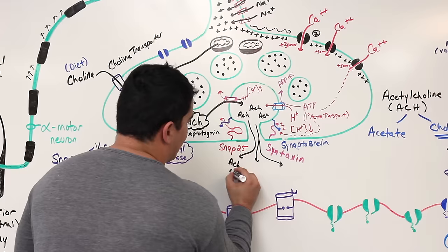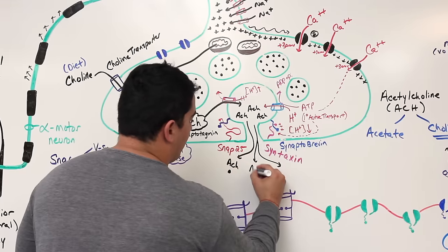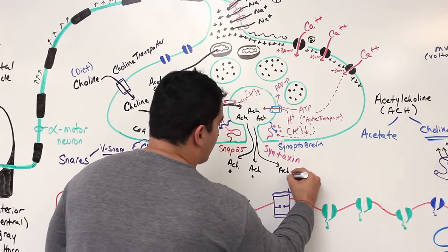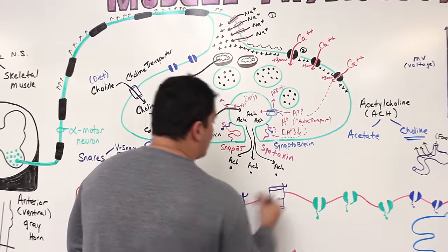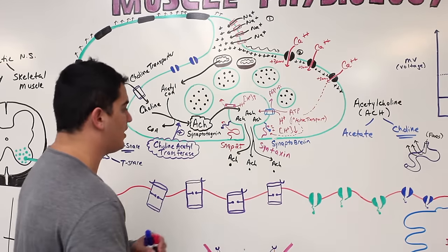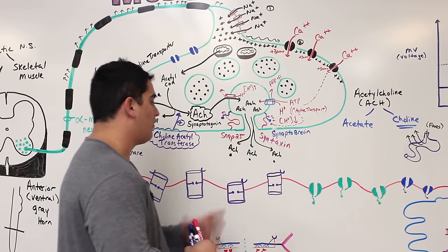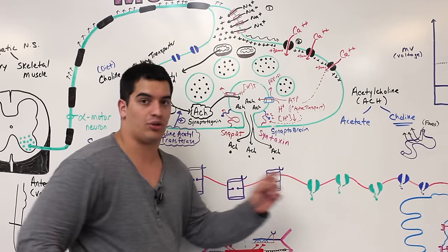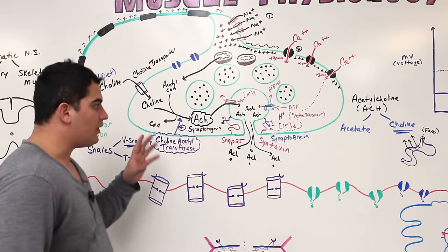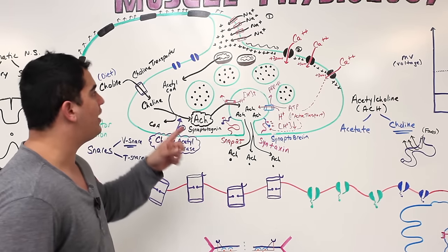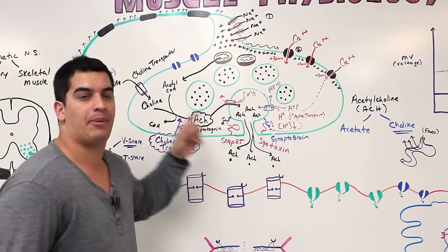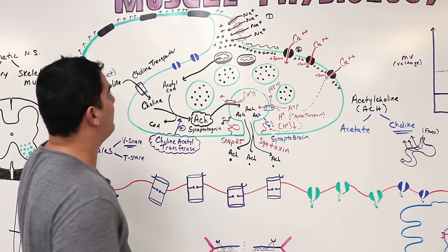Once the synaptic vesicle fuses with the cell membrane due to calcium's presence and the intertwining of SNARE proteins, acetylcholine is released into the synaptic cleft. The ACh then diffuses across the synaptic cleft and causes many different physiological changes.